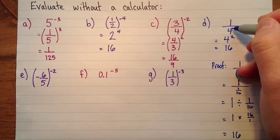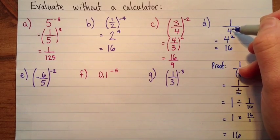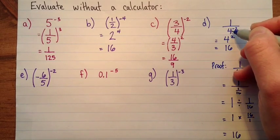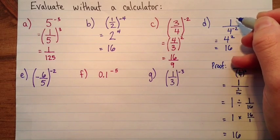But you don't have to do that every time. If you have a negative exponent in the denominator, you can just put it in the numerator and make it a positive. Sorry, if we have a negative exponent in the denominator, we can put that power in the numerator and make it a positive exponent.